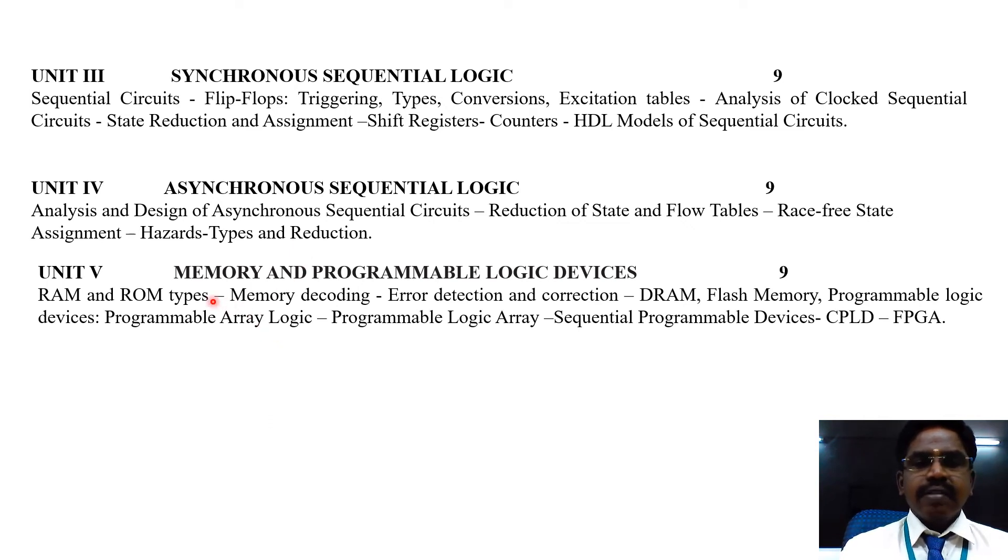And, unit 5, it is exclusively for memory and programmable logic devices. RAM and ROM, random access memory, read-only memory, memory decoding, error detection and correction, dynamic RAM, flash memory, programmable logic devices, programmable logic array, sequential programmable devices, CPLD, and field programmable gate array. So, these are coming under the unit 5.